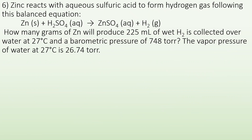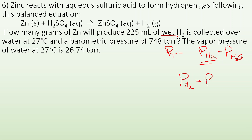Last question: zinc reacts with aqueous sulfuric acid to form hydrogen gas. How many grams of zinc will produce 225 milliliters of wet H2 collected over water at 27°C with a pressure of 748 torr? The vapor pressure of water at that temperature is 26.74 torr. So the pressure of H2 = 748 − 26.74 = 721.26 torr.